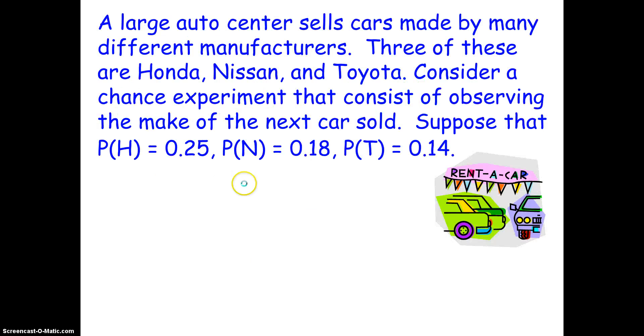So let's try an example. A large auto center sells cars made by many different manufacturers. Three of these are Honda, Nissan, and Toyota. Consider a chance experiment that consists of observing the make of the next car sold. Suppose that P(H) = 0.25, P(N) = 0.18, and P(T) = 0.14. So when you read a question like this, you have to ask yourself, are these events disjoint? And yes, they are.